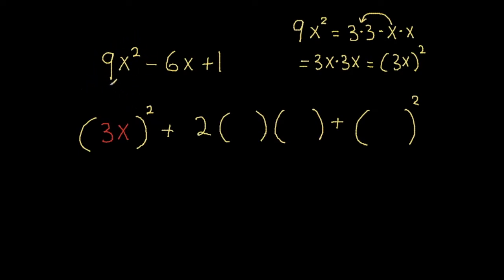Good — that's the first term that's being squared. Now is there another thing being squared here? The negative 6x doesn't look like something we can square to get, so I'll skip that and go to the last term: what do we square to get 1? There are two options — we could square 1, because 1 times 1 is 1, or we could square negative 1, because negative 1 times negative 1 gives 1. So I can choose negative 1 or 1 — which one do I pick?